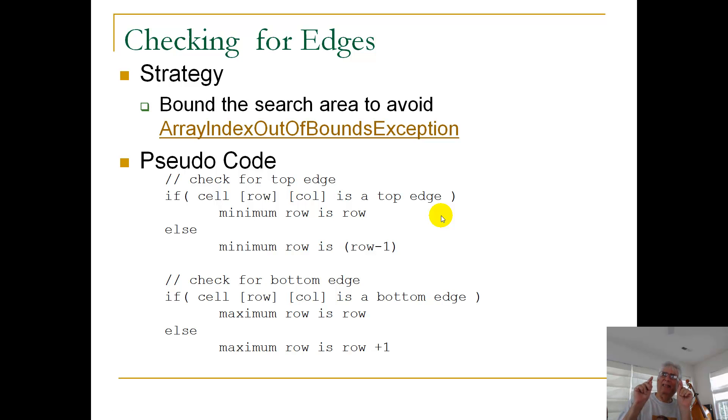We want to identify the rows, the rows, and in the case of the left and right, the columns, where we can search and where we can't search.